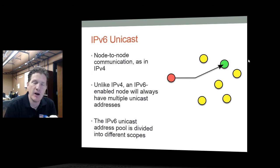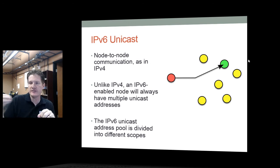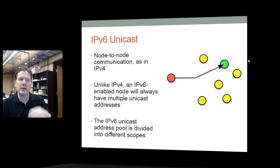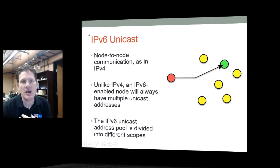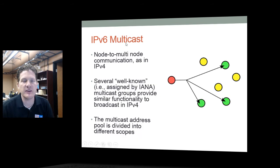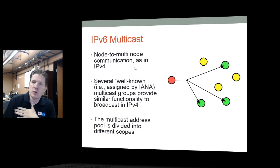The IPv6 addresses assigned to a machine have different scopes. You'll have one address for one scope, another address for another scope, and possibly a third for yet another scope. IPv6 addresses get assigned to the machine based on the scopes that machine requires. Now let's look at multicast.